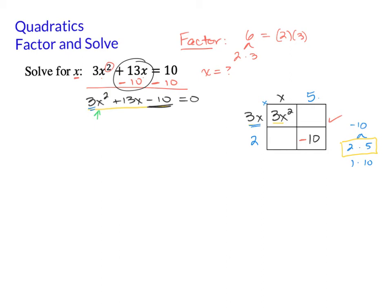So 3 times 5 is 15x. 3x times 5. And now x times 2 give us 2x. So what we've actually made here is we have made 15x and 2x. These are the middle terms.